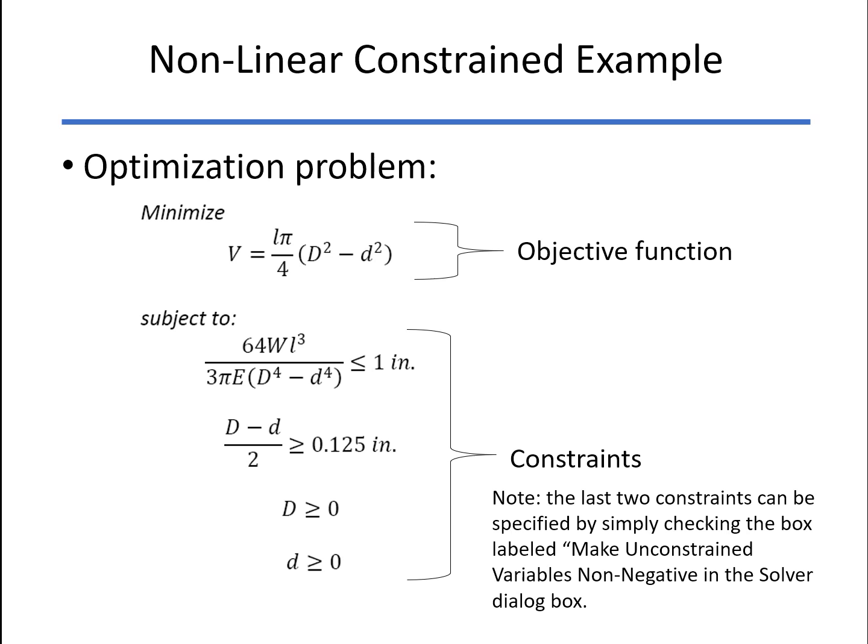And we know in Solver that those last two constraints, we don't have to enter them as shown here. If we just check the box that says make the unconstrained variables non-negative, then that will accomplish adding the constraints that d and d are both greater than or equal to zero.